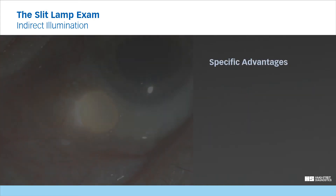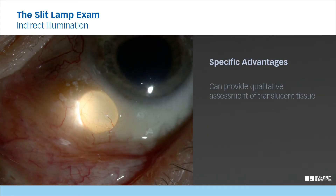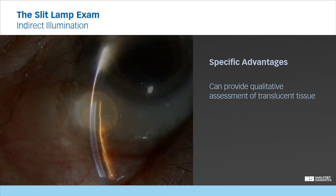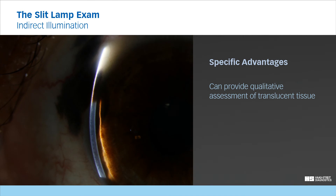Specific advantages. Indirect illumination can provide a qualitative assessment of translucent tissues, such as in this conjunctiva. The scattered light fills and illuminates the entire lesion to show that it's filled with clear fluid and that there is no blood or scar tissue present. In contrast, this is an example where the light is absorbed by the pigment in the melanoma and does not scatter through the opaque lesion into the surrounding structure.